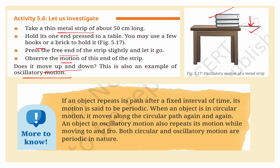If an object repeats its path after a fixed interval of time, its motion is said to be periodic. An object in circular motion moves along the circular path again and again; an object in oscillatory motion repeats its to-and-fro movement. So both circular and oscillatory motion are periodic in nature. Periodic motion is a type of motion that repeats itself after a fixed interval of time, known as the period of the motion. For example, a pendulum swinging back and forth is an example of periodic motion.